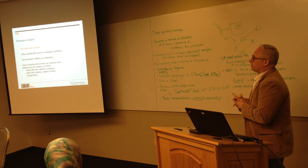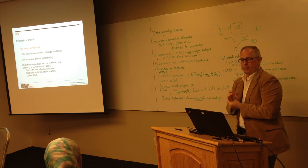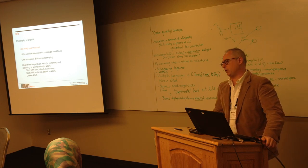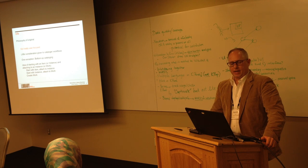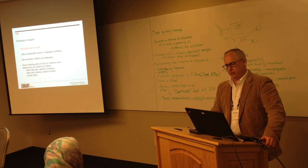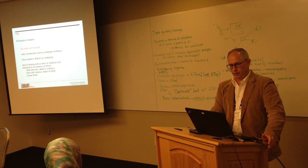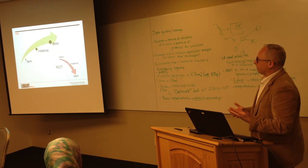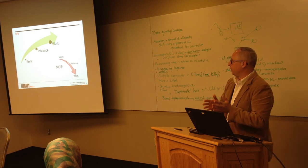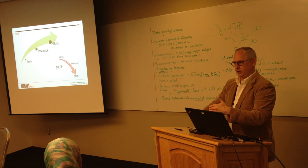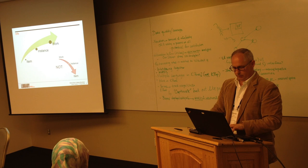There was one exception in considering users, and that was for bottom-up cataloging — the idea that you would start with an item, attach that to an instance, and then attach the instance to a work. So you start with an item attached to an instance, start with an instance attached to a work — not top-down, beginning with a work and going down to an instance and so on.